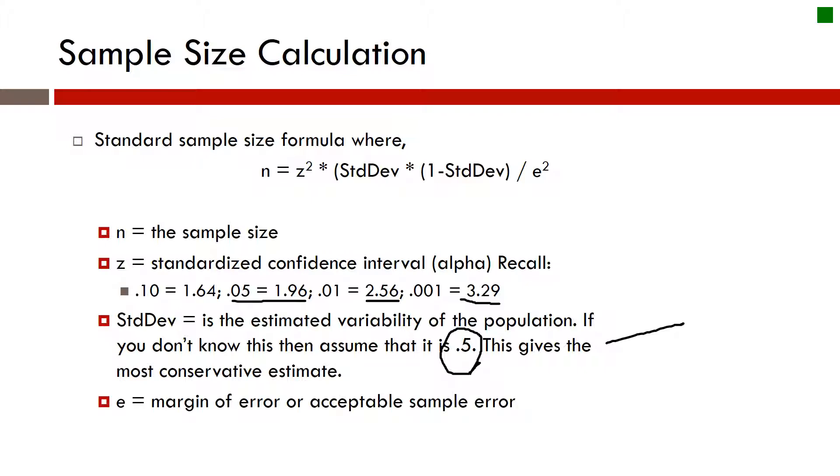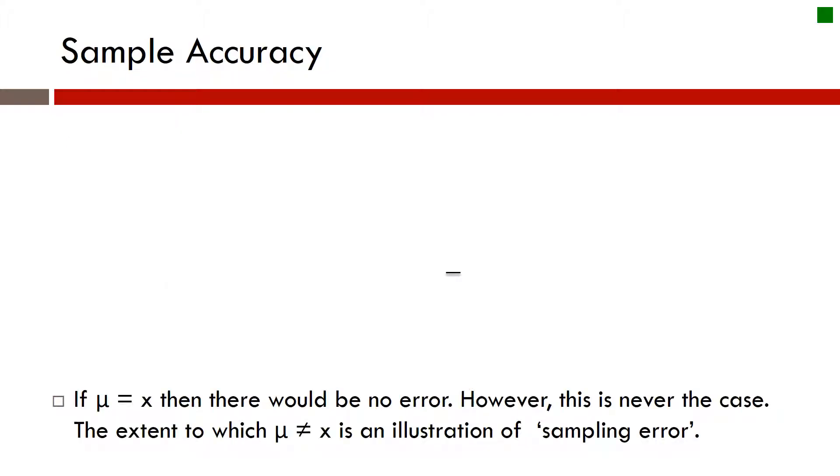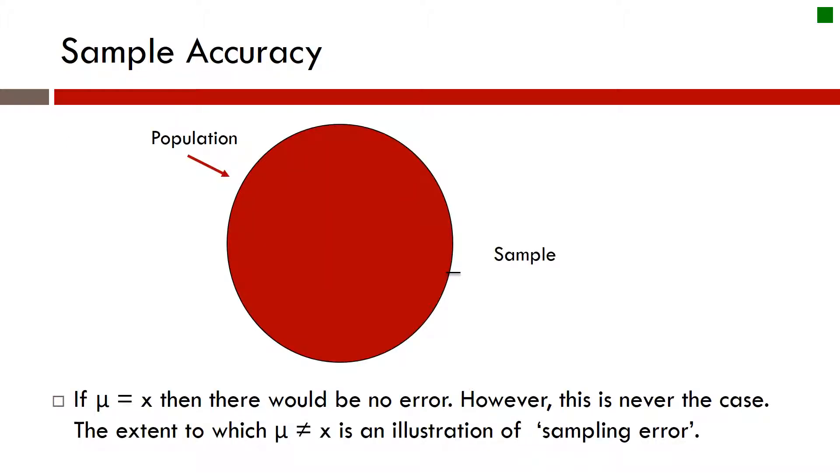The last component is this E, which is the margin of error that you are willing to accept from sampling error. We'll have some examples here that we'll show in just a moment.